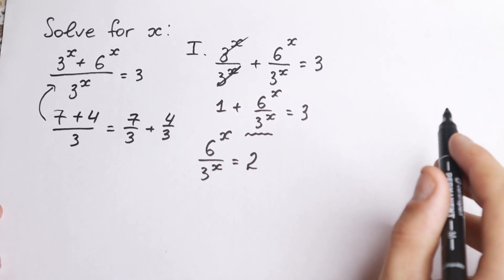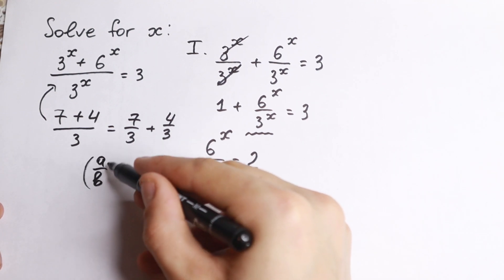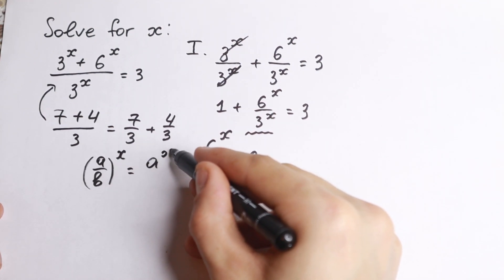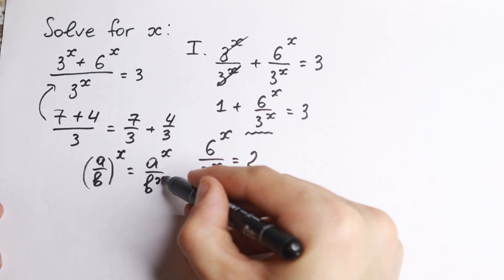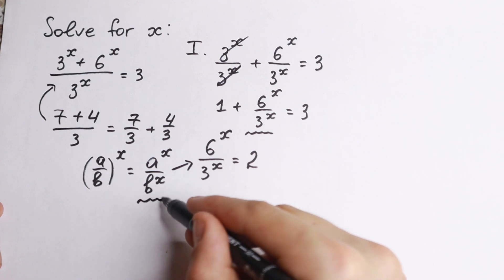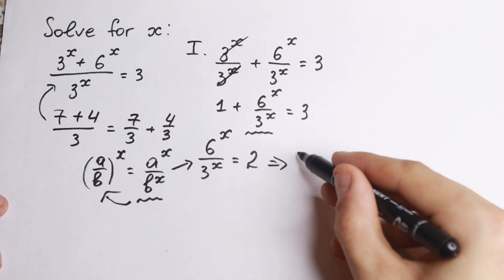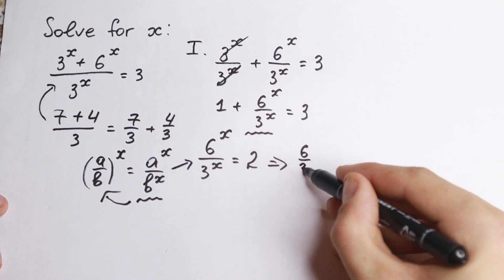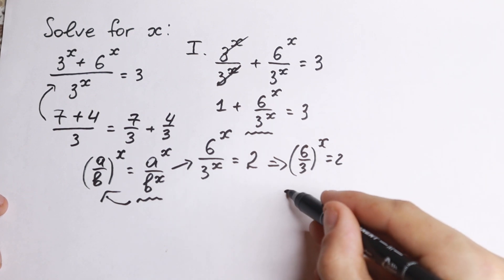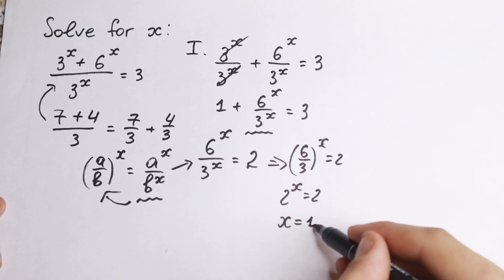Next, we need a key property: if we have a over b all raised to the power x, we can write it as a to the x over b to the x, and this works in reverse too. That is exactly our case. So 6 to the x over 3 to the x equals 6 over 3 to the power x, which equals 2 to the x, equal to 2. Therefore x equals 1.